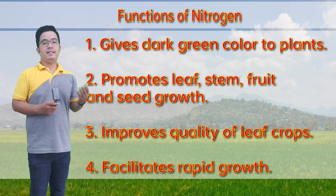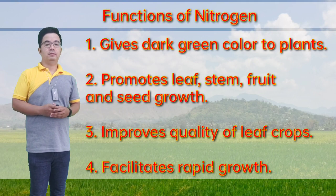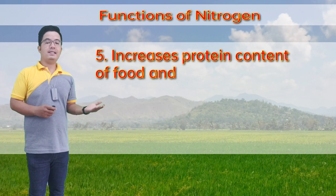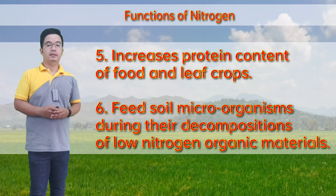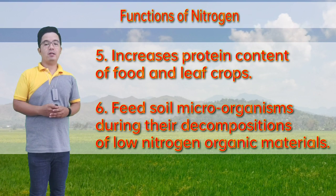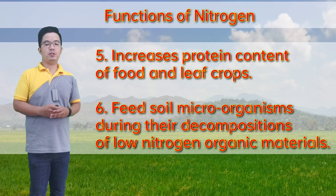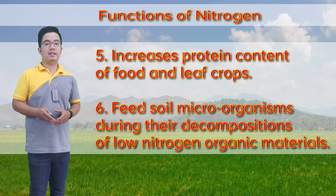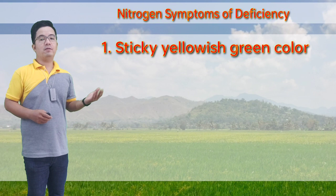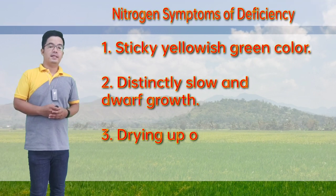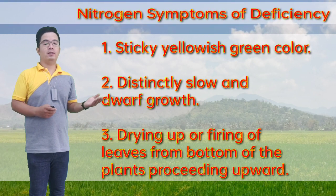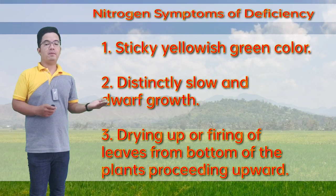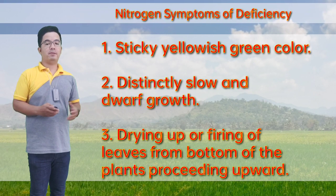Another function of nitrogen is to facilitate rapid growth. It also increases protein content of food and leaf crops. It feeds soil microorganisms during their decomposition of low-nitrogen organic materials. Symptoms of nitrogen deficiency include: light yellowish-green color, slow and stunted growth, and drying or firing of leaves from the bottom of the plant upward.